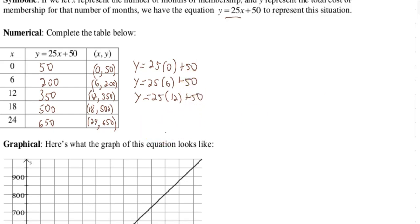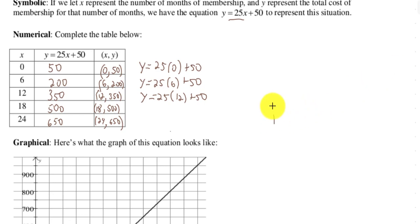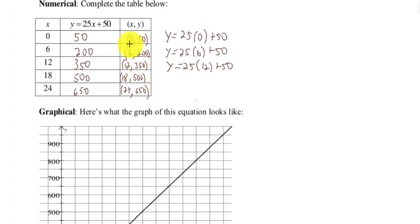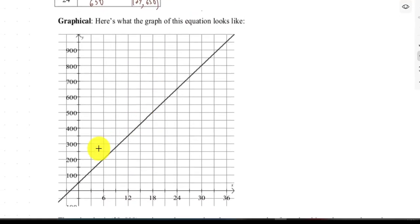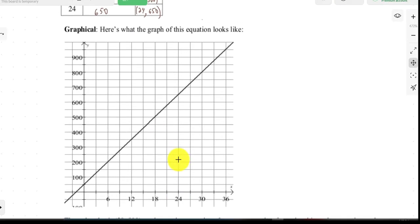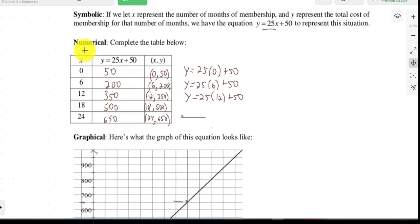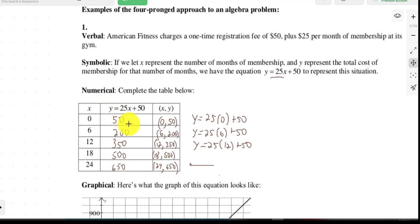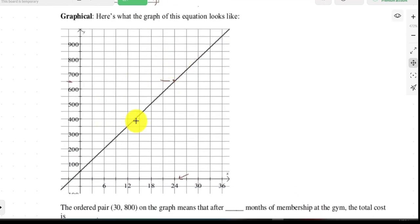So let's carry on. Now it says here's what a graph looks like. So if we were to plot these points, 0, 50, 6, 200, 12, 350, all of those points would be on this line. 24, 650. If you go down to 24 and up, you'll notice that that's at 650. This point here is 24 comma 650. So all of those points fall on this line. So here's a numerical description of a gym membership is 50 bucks plus $25 per month. This is a numerical description. Here's a graphical description of that same sentence.